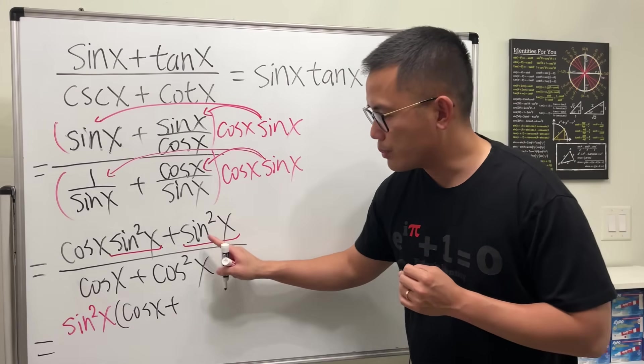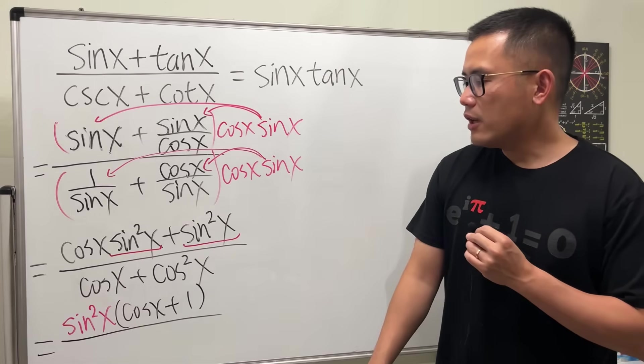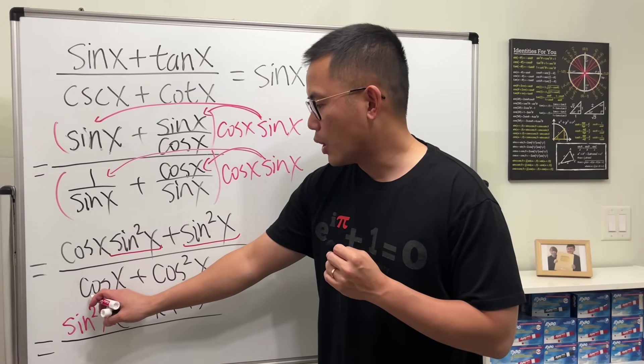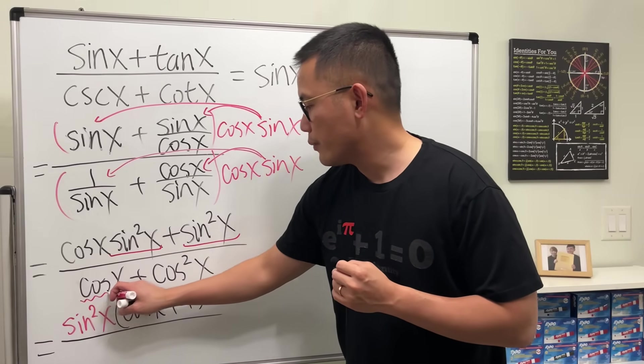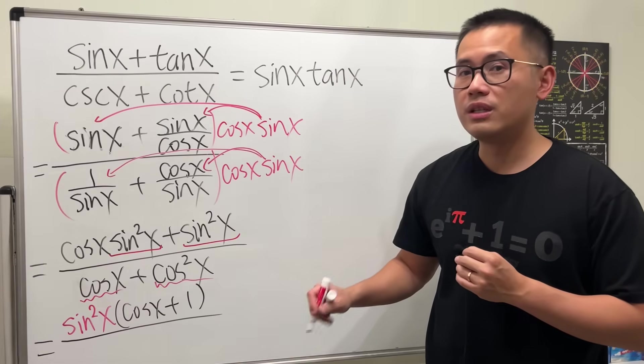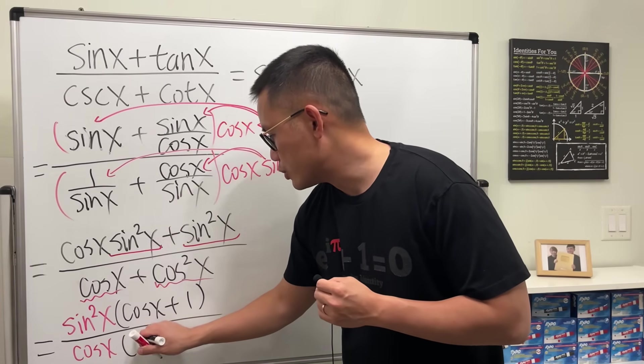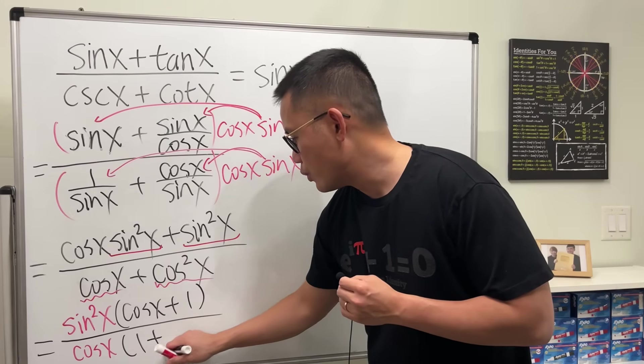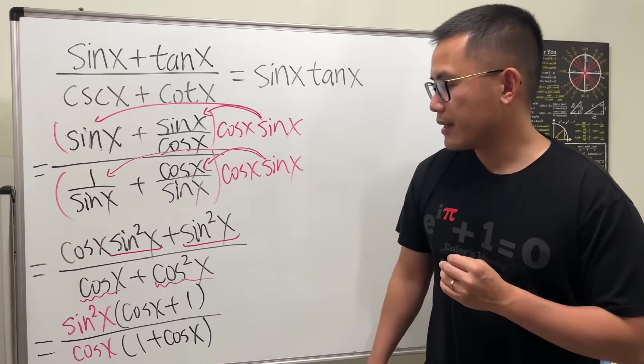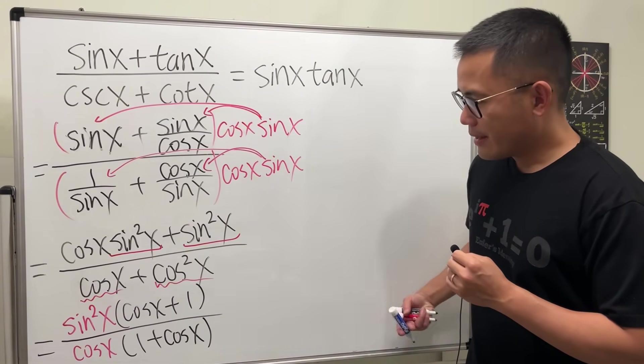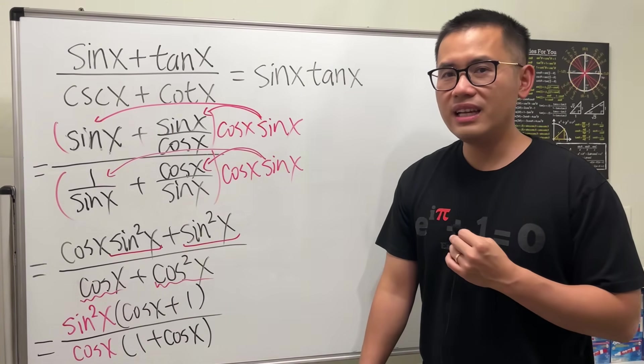Now, for the bottom, notice this is cosine to the first power and cosine to the second power, so we can factor out cosine to the first power. This will be one, and this will be cosine x. Now, cosine x plus one and one plus cosine x are the same because order doesn't matter, so we can cancel them out.